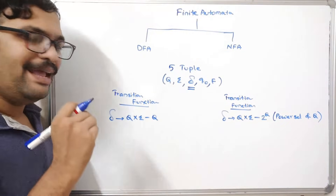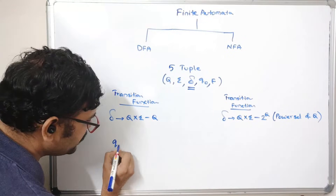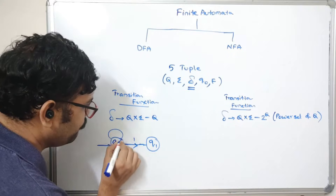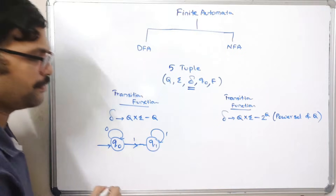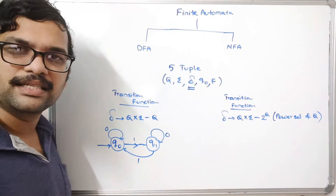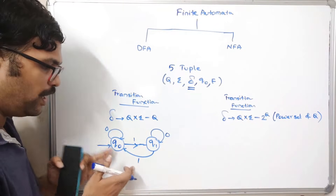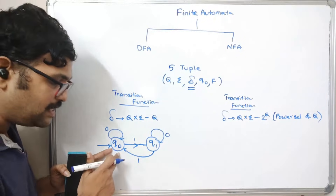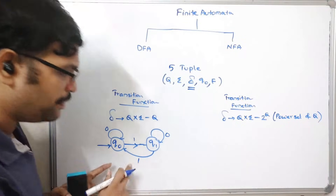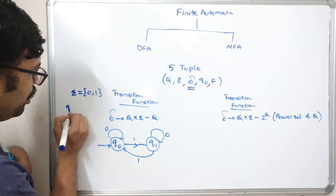For a DFA, for every state with one input symbol there should be exactly one transition. For example, take two states Q-naught and Q1. Q-naught is the starting state. On input 1 it goes to Q1, and on input 0 it has a self-loop. Q1 on input 0 has a self-loop, and on input 1 it goes back to Q-naught. The input symbols sigma equals {0, 1}, and in the transition table we have Q-naught on 0 and Q-naught on 1.